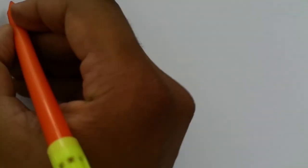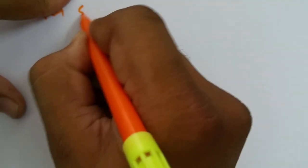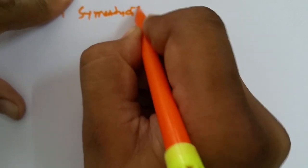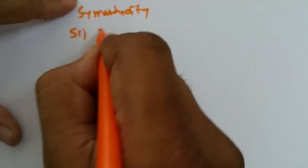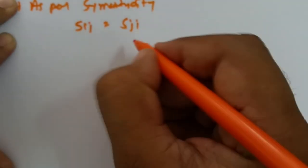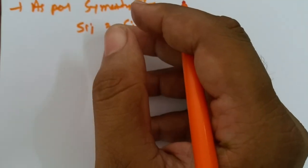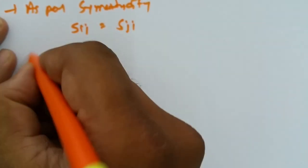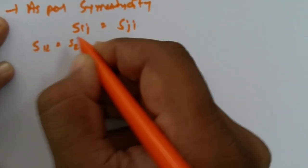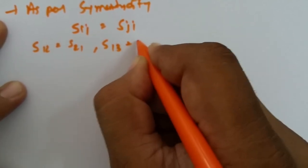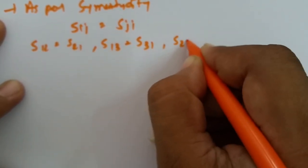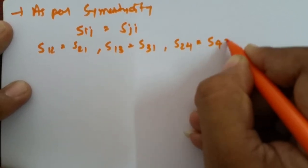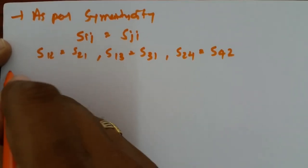For further derivation of the scattering matrix, we need to consider the symmetry property. As per the symmetry property of a reciprocal junction, Sij = Sji. So S12 = S21, S13 = S31, and S24 = S42. Now let us place all these values into the scattering matrix.